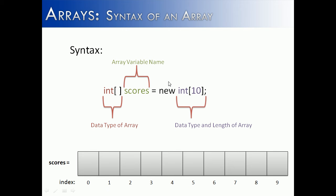So this side is actually allocating memory. This is the length, and this is the data type. This syntax should look familiar to you, as it is very similar to the way you create an object. So you have the data type, bracket, variable name, equals new, allocating memory, int, and then the length of the array.